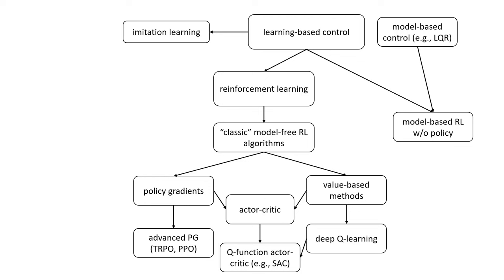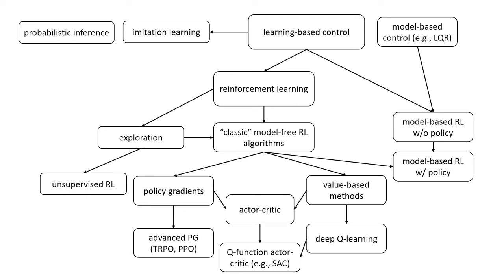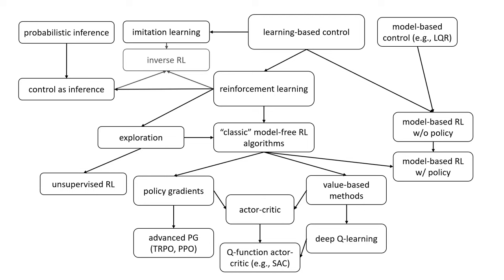In their purest form, model-based RL methods that do not use a policy simply train a model and then plan through that model, without making use of model-free RL concepts. But we can put them together and use learned models in combination with reinforcement learning algorithms like policy gradients or value-based methods to get more effective model-based RL algorithms. There are also concepts that apply across different RL methods, like exploration strategy and unsupervised RL objectives like skill discovery. Other tools like probabilistic inference and variational inference give us the control-as-inference perspective, and together with imitation learning, allow us to derive inverse RL methods.